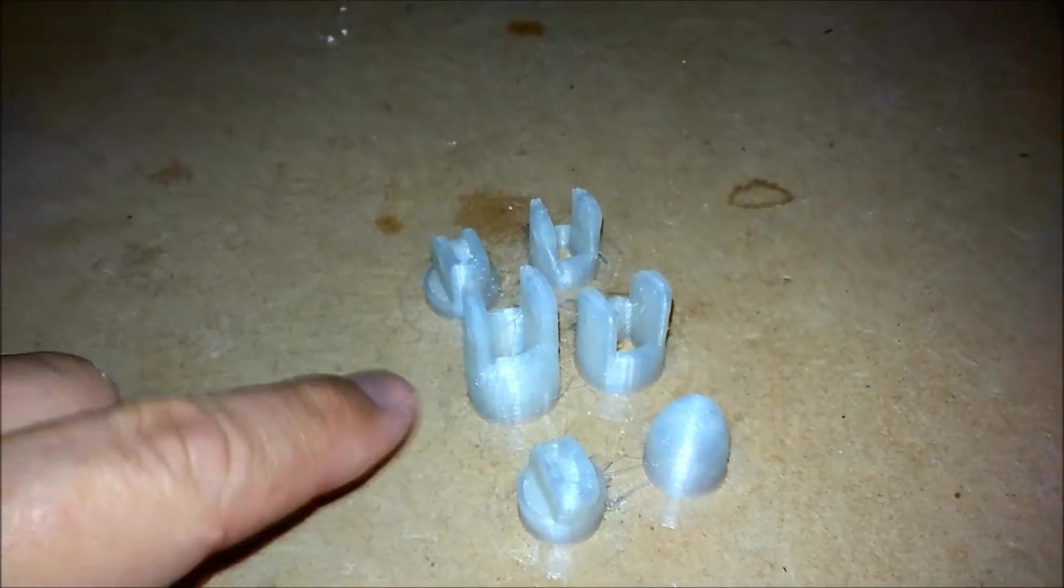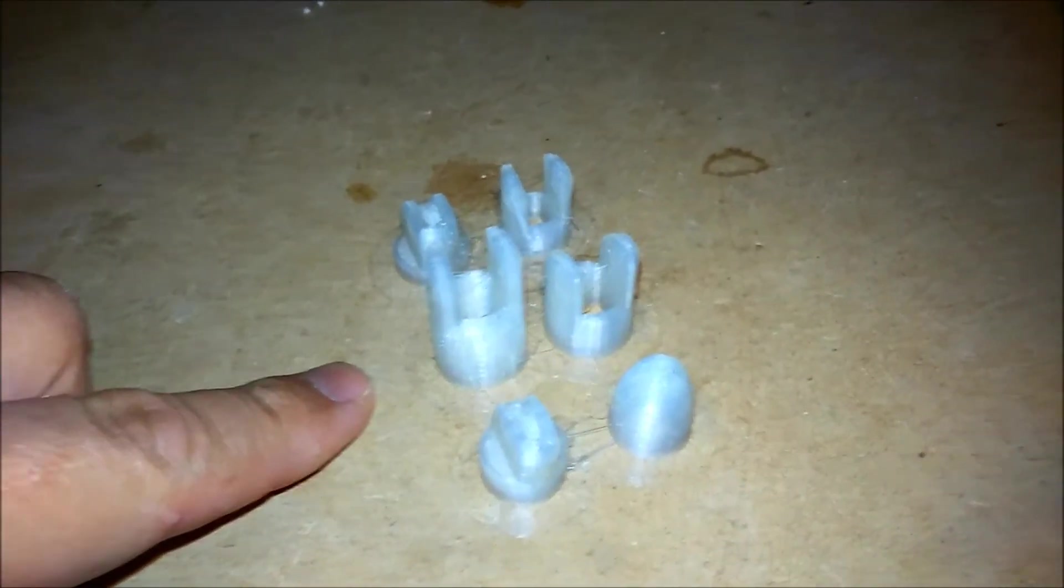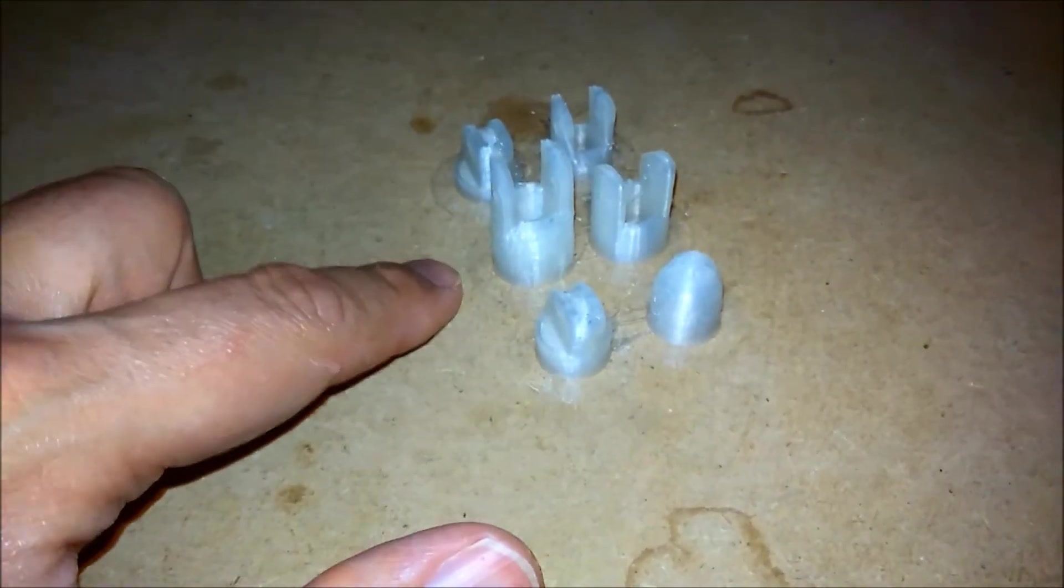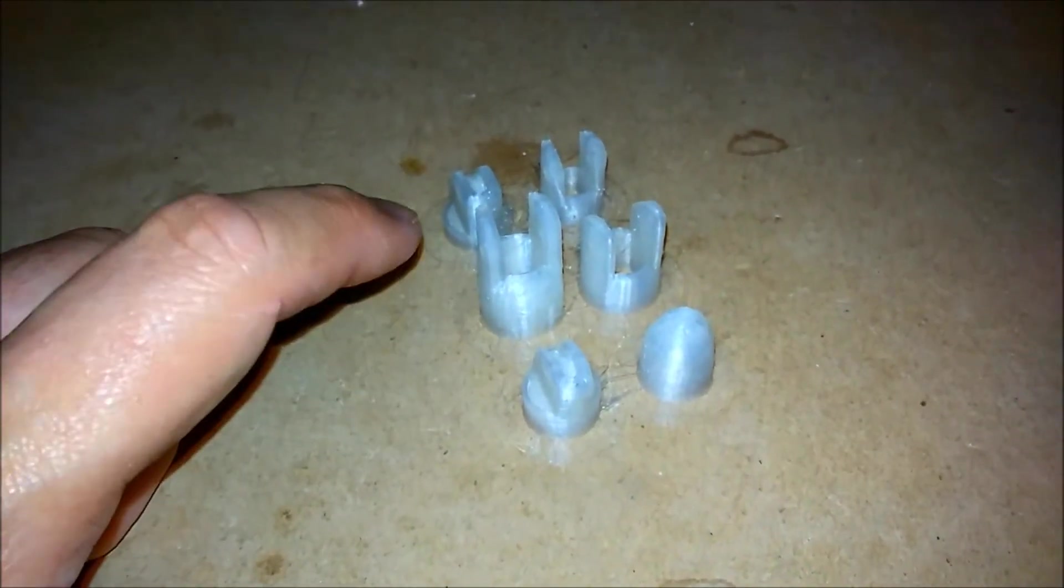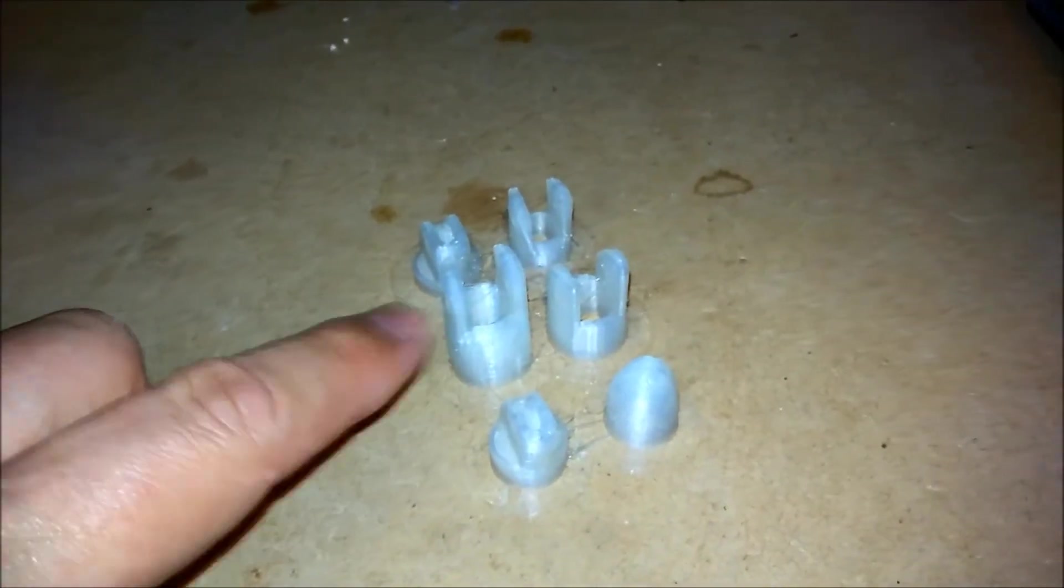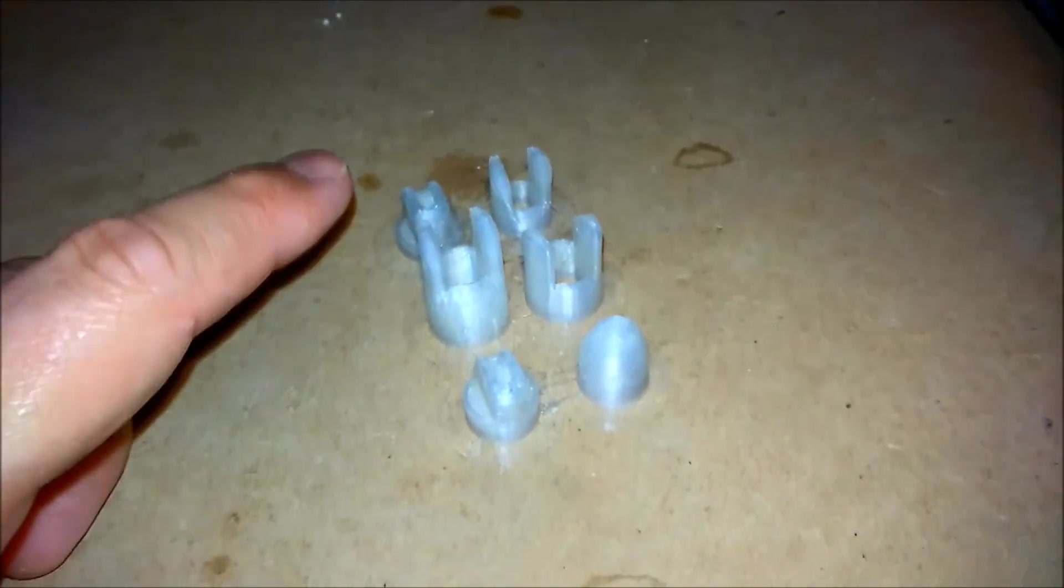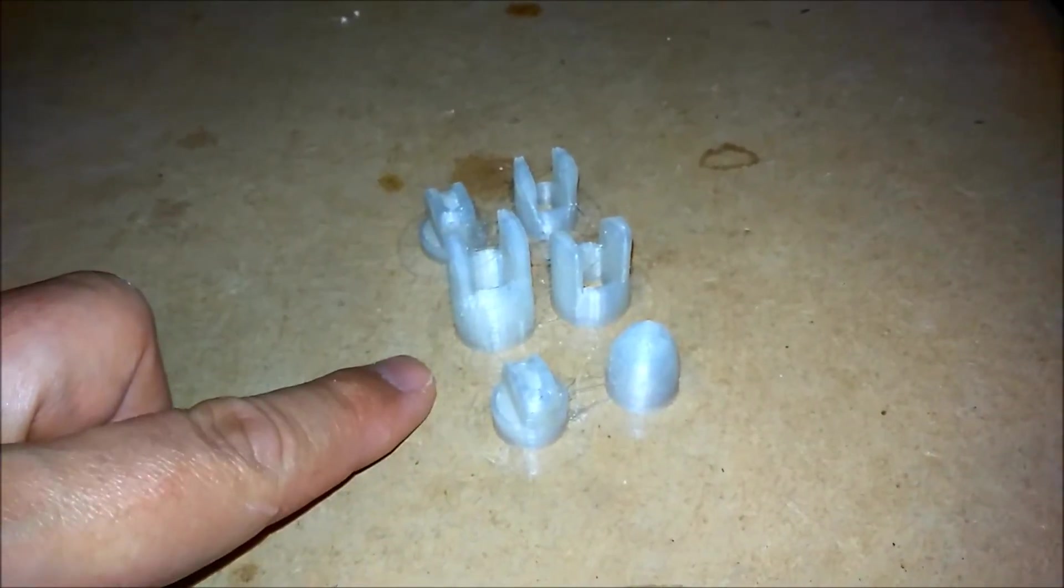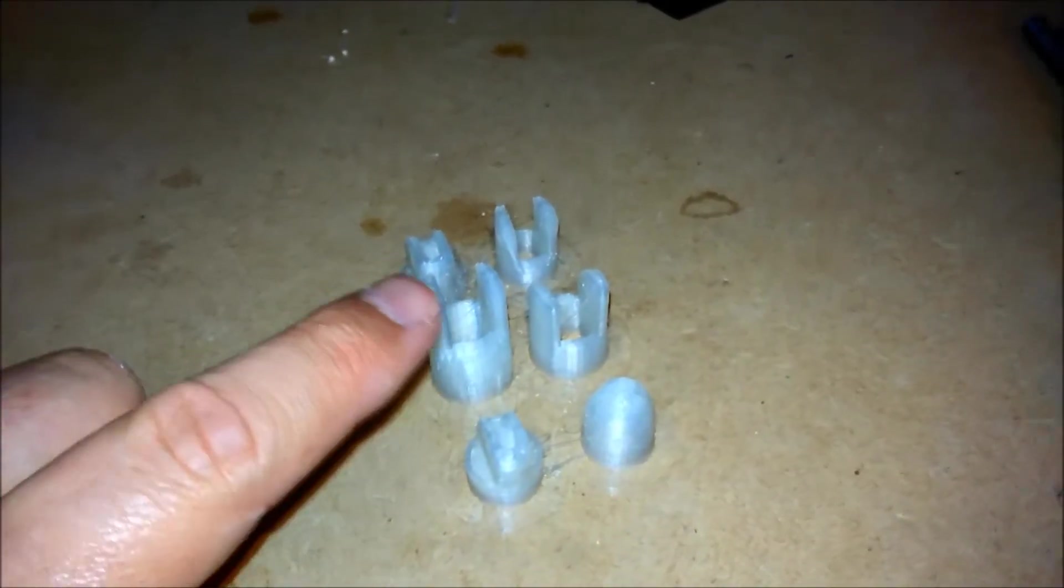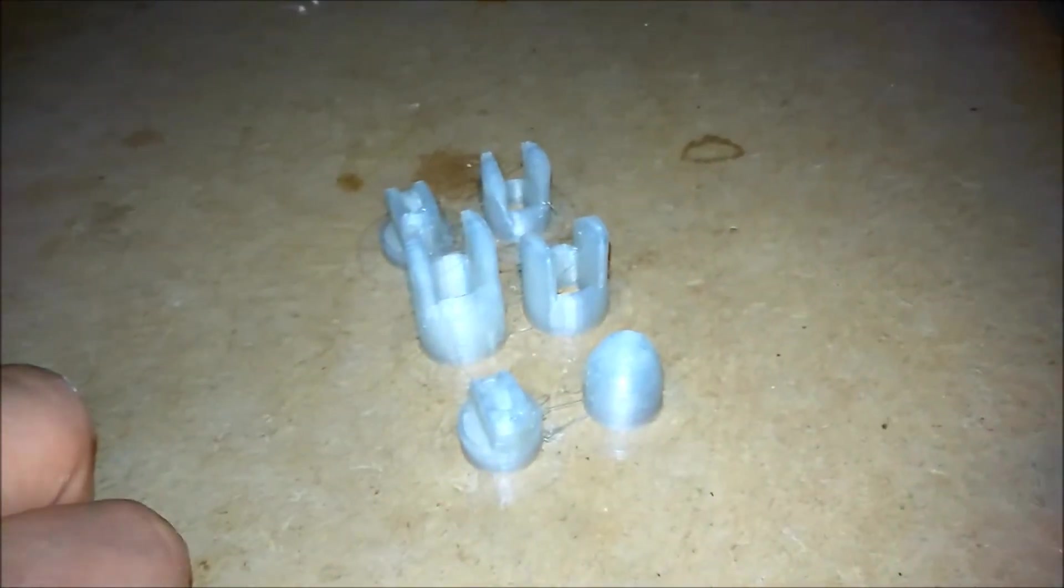The retraction setting seemed to be the biggest improvement but I had to go right up to 6.5mm retraction. I'm not sure how the retraction speed affects the stringing. I'm not sure if you should increase the retraction speed or lower the retraction speed. So if anyone could give me any advice on how I can get rid of this stringing please leave comments below.